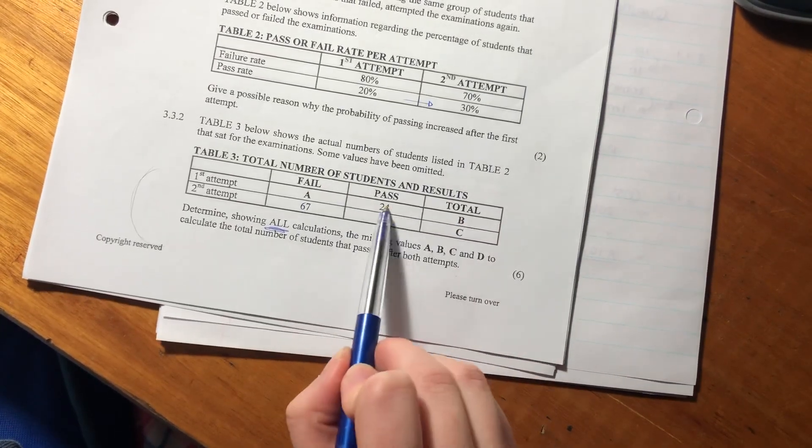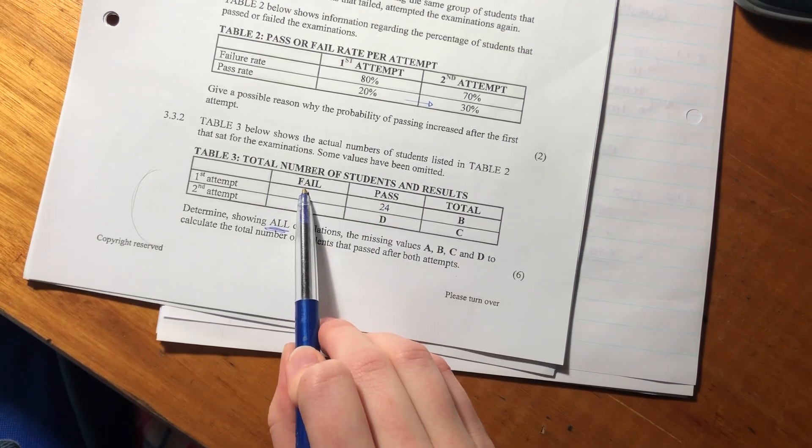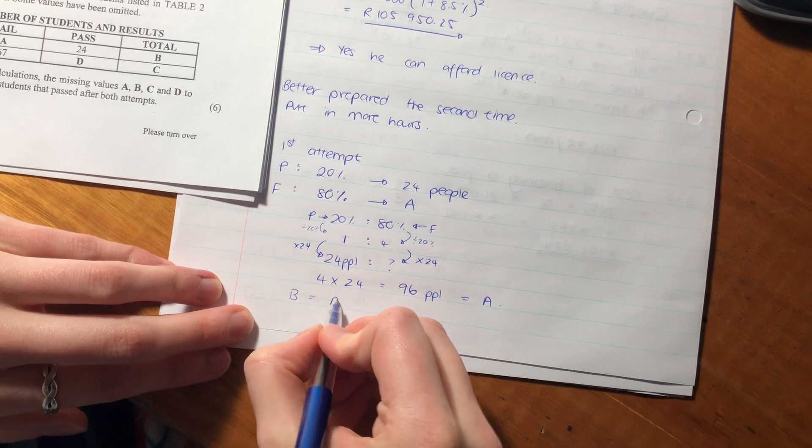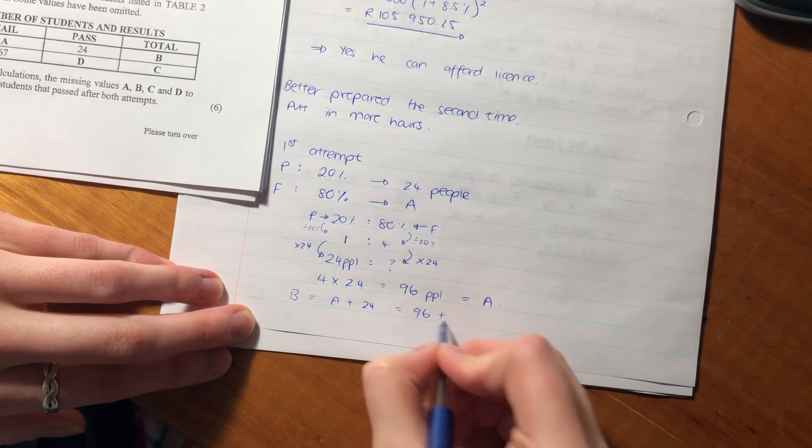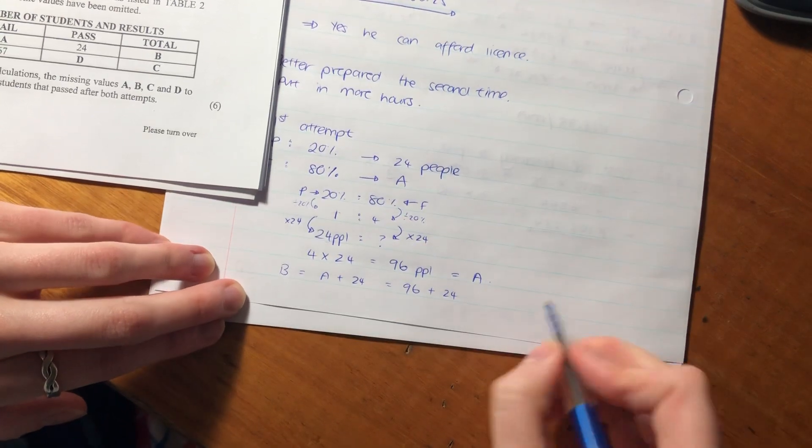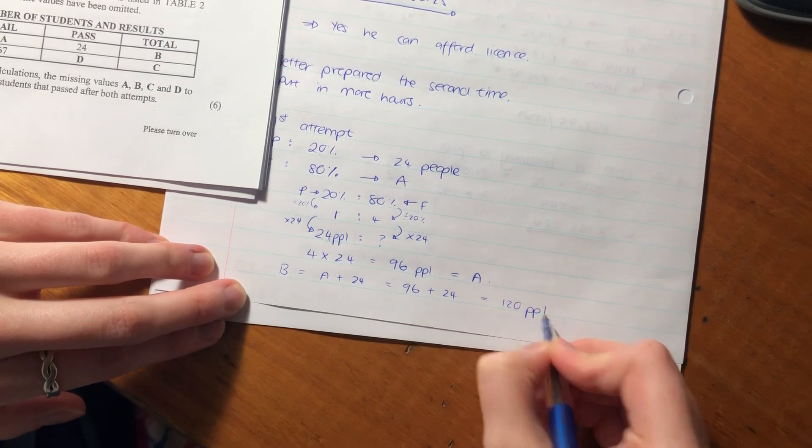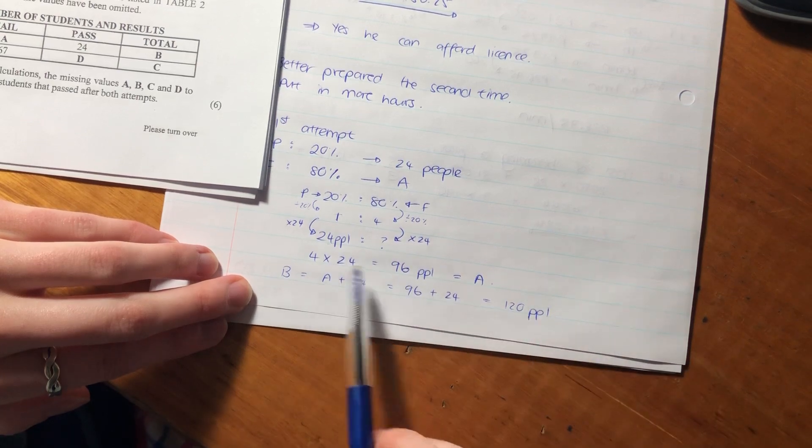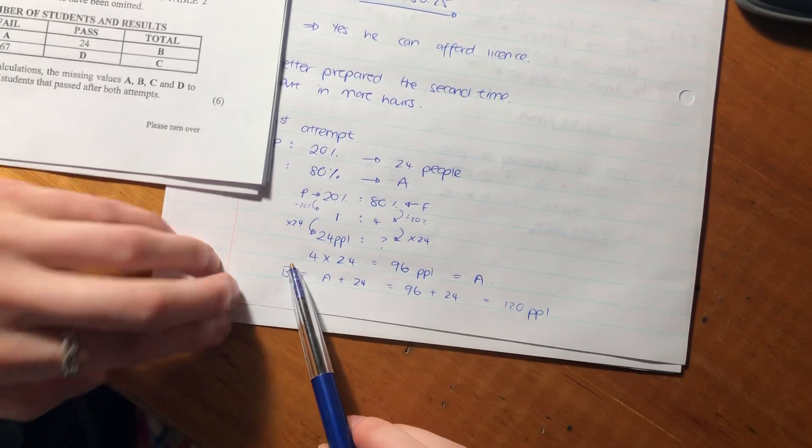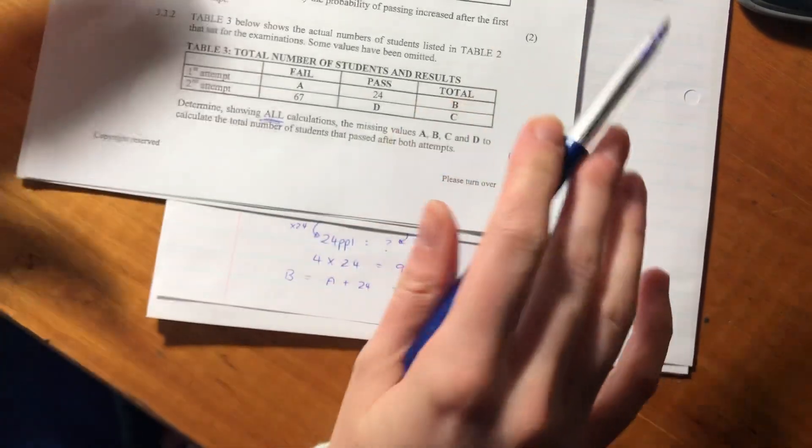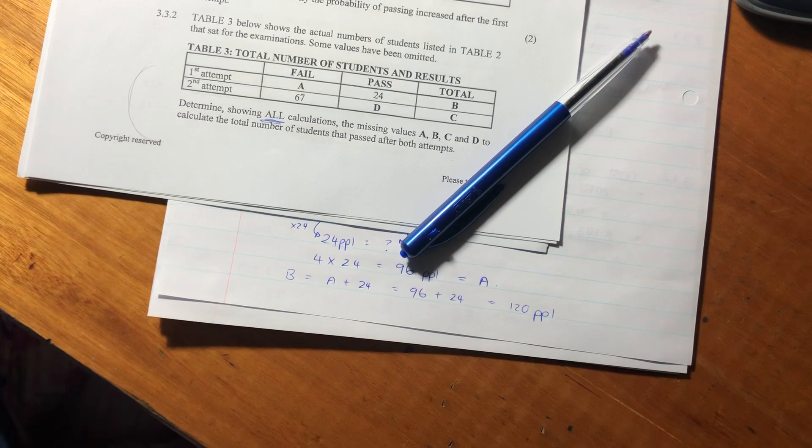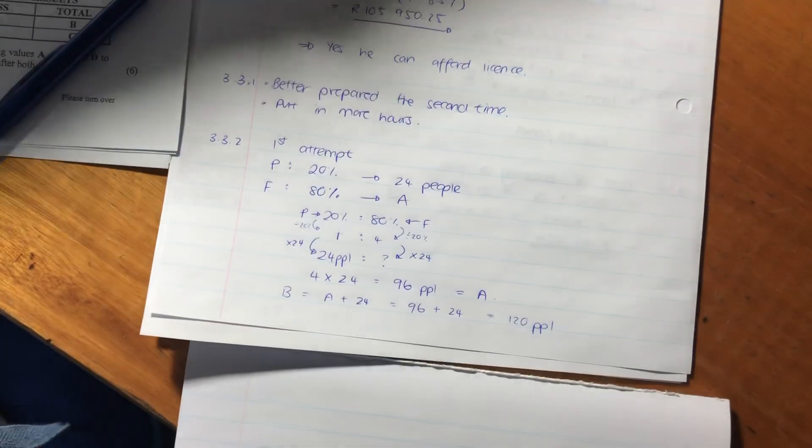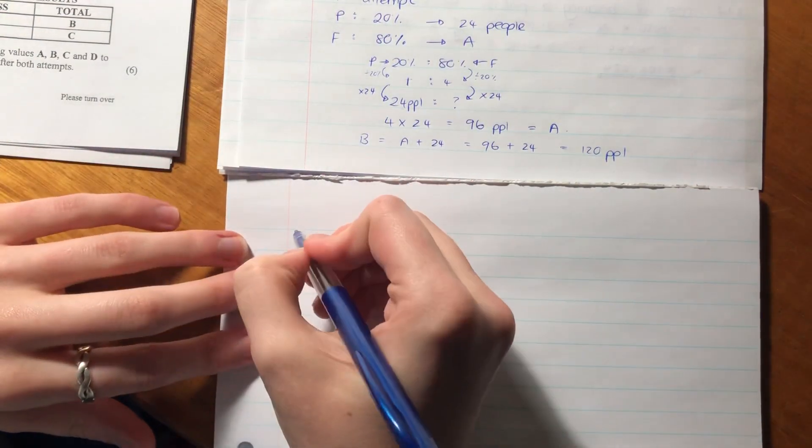A equals 96 people. If we look over here, we see that B is the total, so B would be the sum of those who pass and those who fail. B equals A plus 24, which equals 96 plus 24, which equals 120 people. We've calculated the value of A and the value of B - two of the letters out of the four.